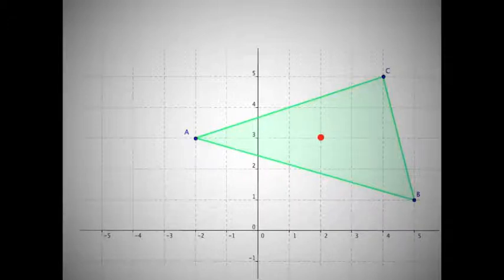For our B-coordinate, which is at 5, 1, we multiply that by negative 1, and we get negative 5, 1.